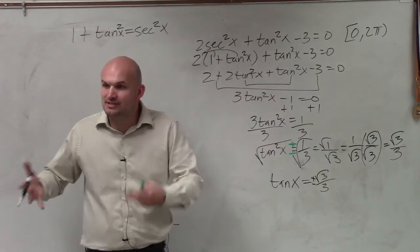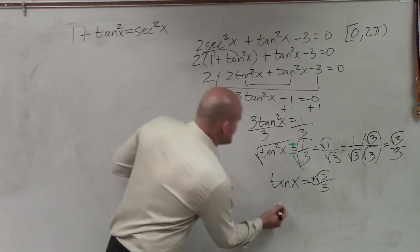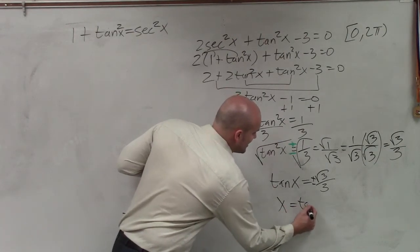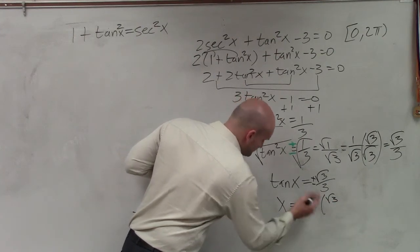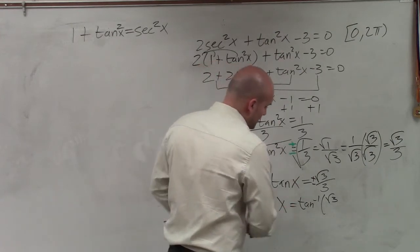x represents the angle. It's always tangent of an angle. So what we're pretty much doing is inverse tangent of square root of 3 over 3. Actually, you want to see the angles that is going to work.